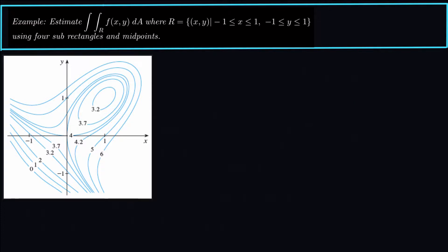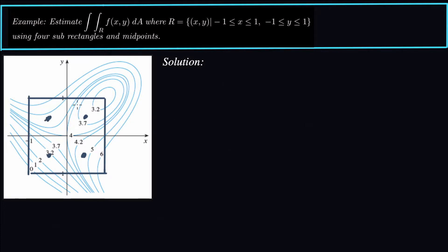The first thing we need to do is partition off this region. We've got our region partitioned in the xy direction, with x and y both going from negative 1 to 1. That creates four sub-rectangles if we cut evenly — evenly spaced in both x and y directions. Because the bounds are the same for both x and y, we get squares. If x went from negative 2 to 2, we'd get rectangles stretched in the x direction, but here we've got nice squares.